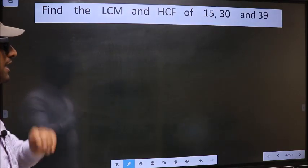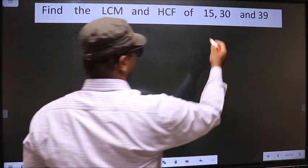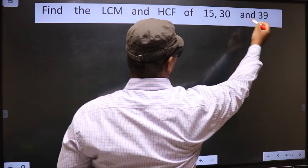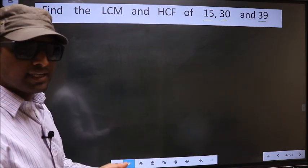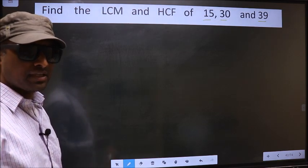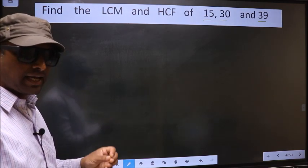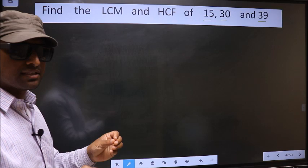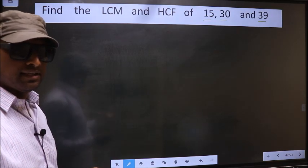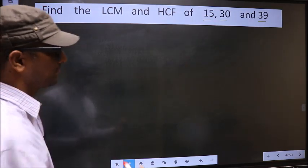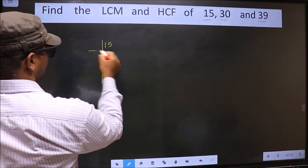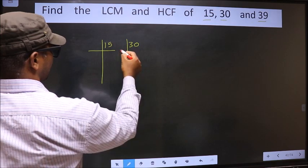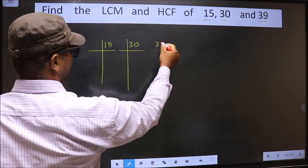Find the LCM and HCF of 15, 30 and 39. To find the HCF and LCM, first we should do the prime factorization of each number separately. That is, see: 15, 30 and 39.